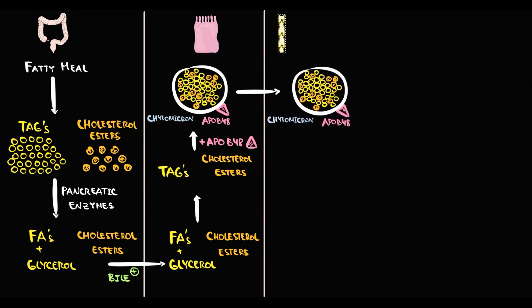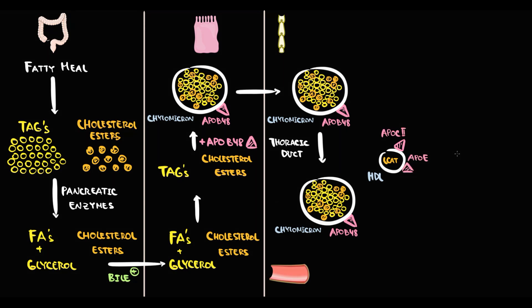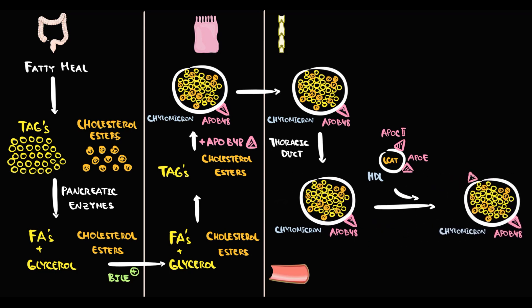From the lymphatic circulation, via the thoracic duct, chylomicrons enter the blood circulation. In the bloodstream, chylomicrons meet another lipoprotein called high-density lipoprotein, which is produced by the liver. A specific function of HDL is that it serves as a donor of apoproteins for other particles. So in the bloodstream, HDL immediately donates two of its apoproteins to the chylomicron: ApoE and ApoC2.